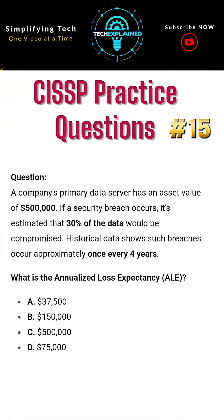Question. A company's primary data server has an asset value of $500,000. If a security breach occurs, it is estimated that 30% of the data would be compromised. Historical data shows that such breaches occur approximately once every four years. What is the annualized loss expectancy?